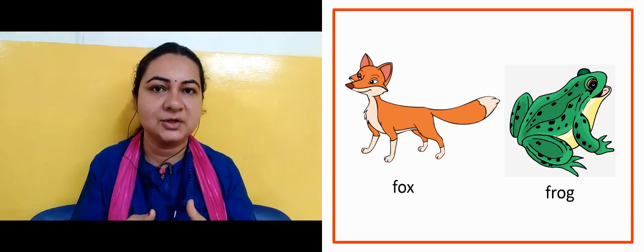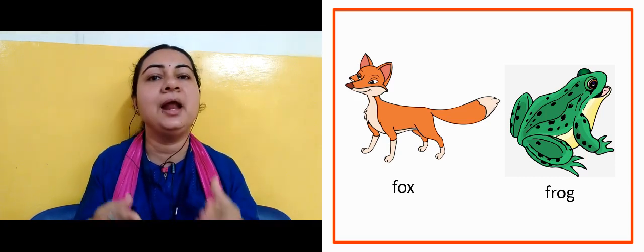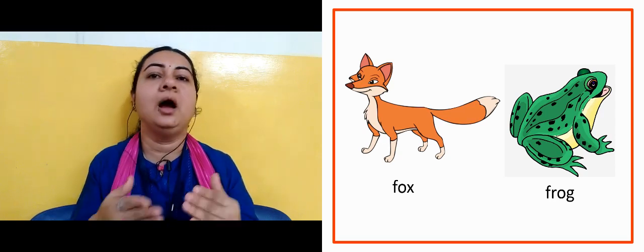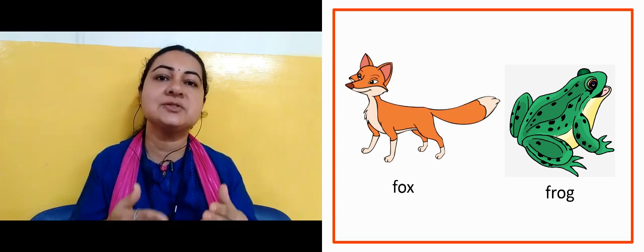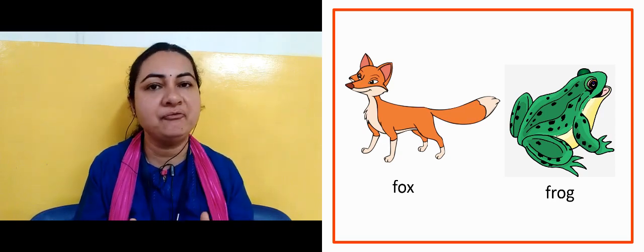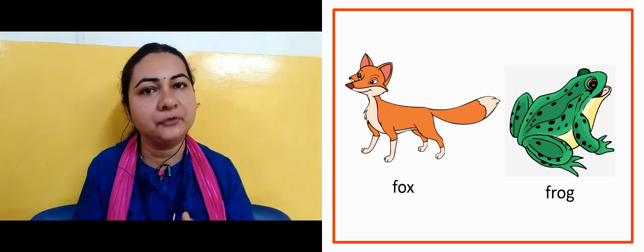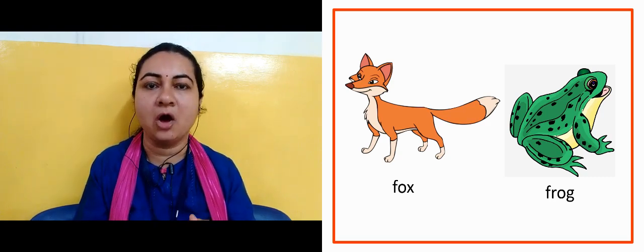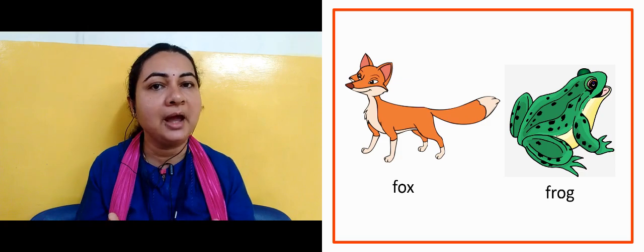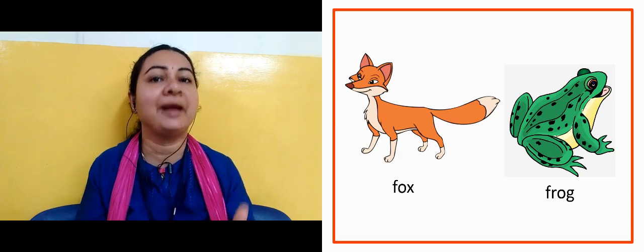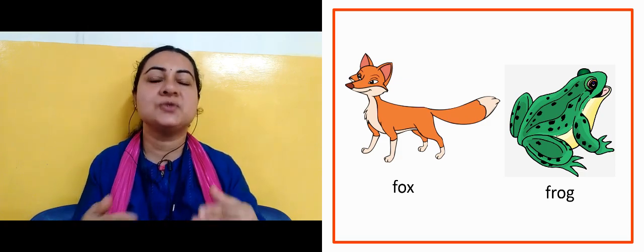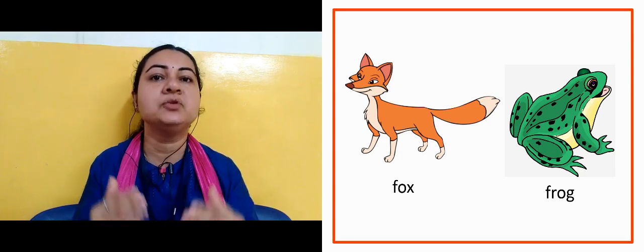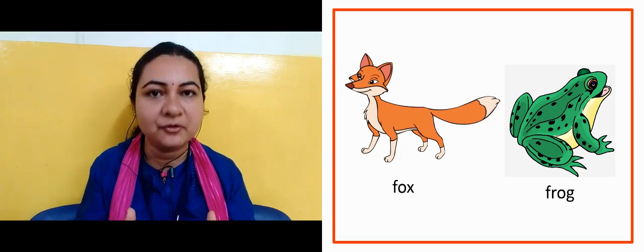Now the next slide is showing us fox. F for fox. It is a wild animal and it lives in the jungle. Another one is frog. F for frog. Frogs generally appear during the rainy season.